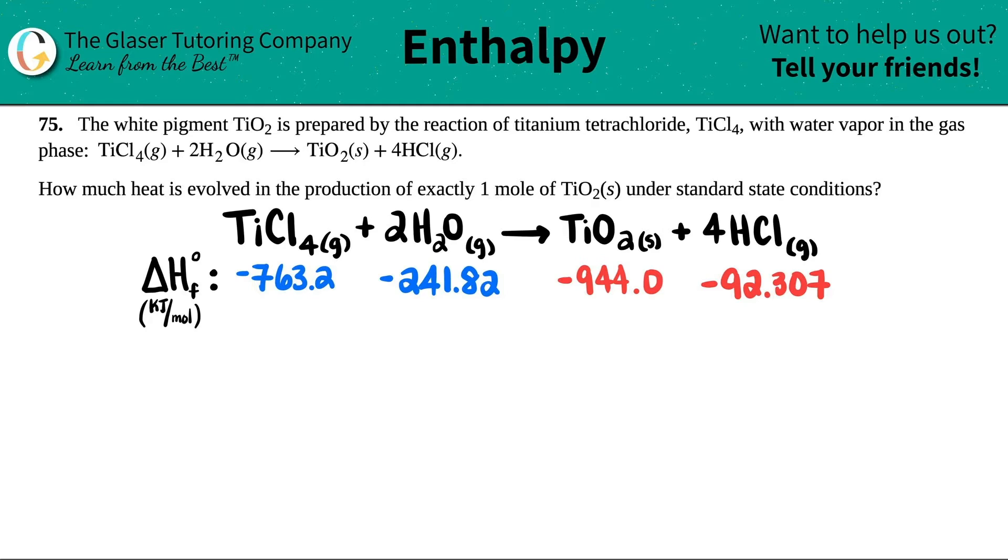Now here comes the question. How much heat is evolved, aka produced, in the production of exactly one mole of TiO2 solid under standard state conditions? So they're asking for how much heat, a kilojoule value. Joules are a unit of heat. When we produce one mole under standard state conditions, that means we have to get standard values in a chart.